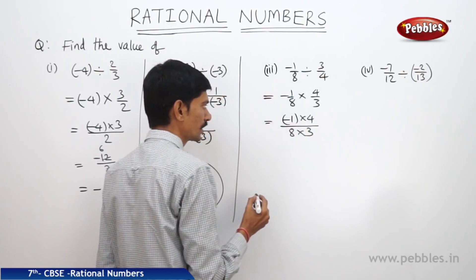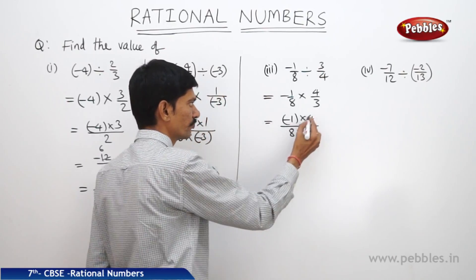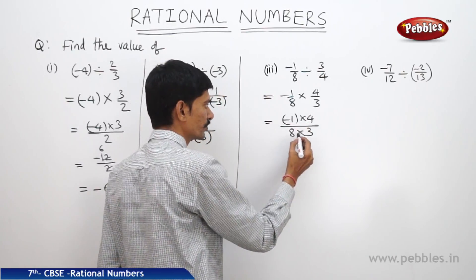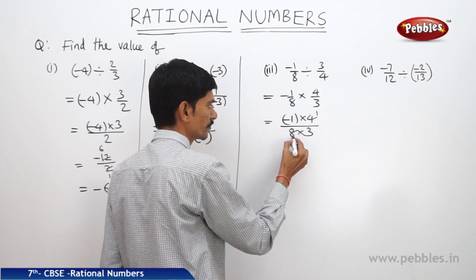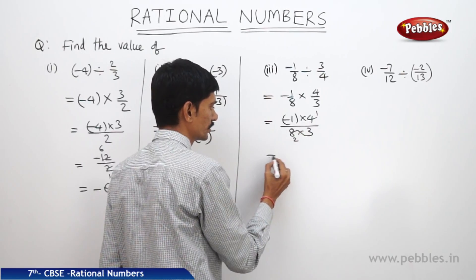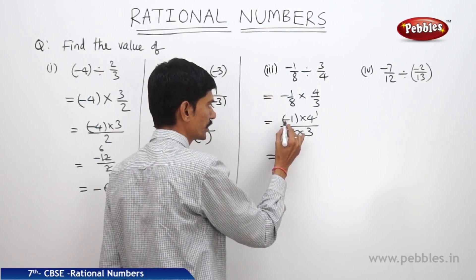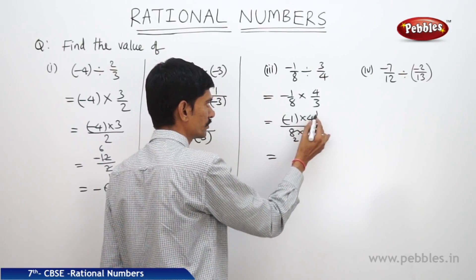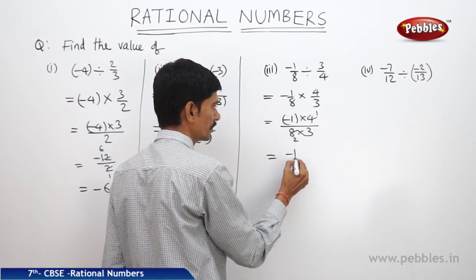We can cancel 4 and 8 in the 4 times table: 4 ones are 4, 4 twos are 8. So we get minus 1 into 1 which is minus 1.